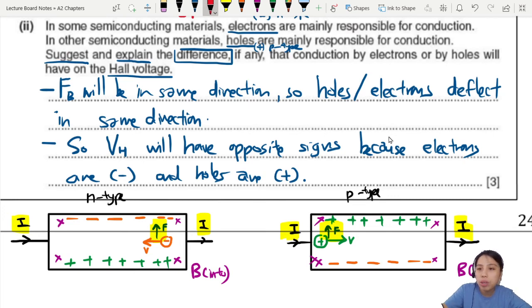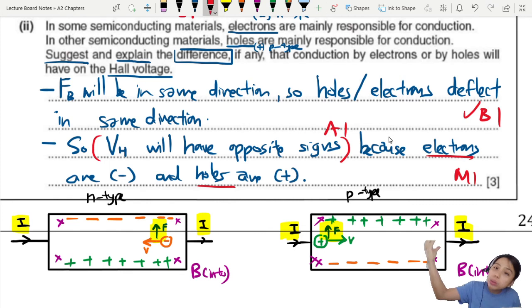Three marks. First one talks about FB that is always pointing upwards. Well, not upwards, but always in the same direction. Whether you're a hole, electron, it will still point in the same direction. And the next one you talk about. So what happens is the effect on VH. VH opposite signs. But depending whether you're N type or P type. And so this will be one. But you also must explain why different signs. Because electrons are negative. Holes are positive. So you explain. I mean, gotta state the obvious. Electron is negative. But what are holes? Positive. So you must say.